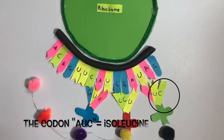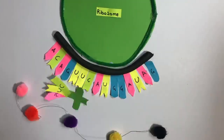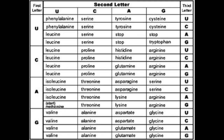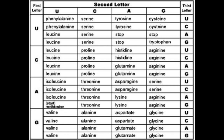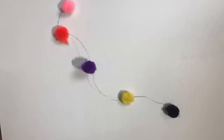You are able to find which amino acids have been made by using a table such as this one. For instance, a codon with the bases CAG codes for the amino acid glutamine. Another example could be UAG, which equals a stop codon, and that is where the polypeptide chain ends. This polypeptide chain can then form a protein.